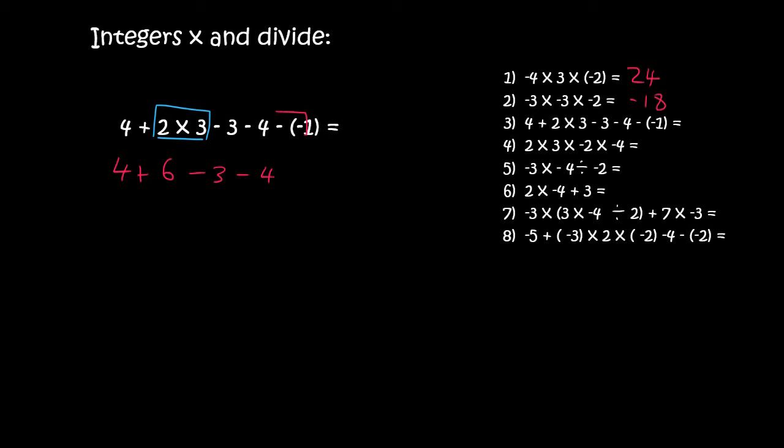Now here we have a minus and a minus next to each other, and we know that 2 minuses is actually just a plus. And so here we have only plus and minus, so we must move from left to right. So if you have 4 plus 6, that's 10. Then 10 minus 3, that is 7. 7 minus 4 is 3, and then 3 plus 1 is 4.